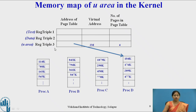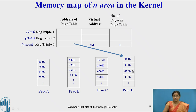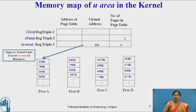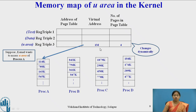Here, only the virtual address of the u-area and the number of pages in the page table are shown — text and data are not shown. Currently, process D is executing in kernel mode, so the u-area points to the page table of process D, whose virtual address is 2M, with 4 pages present in these tables. Now, suppose the kernel wants to access the u-area of process A — it is necessary to change the virtual address. It will load the virtual address of process A, which is 1M, and the number of pages present in the page table for process A, which is 4. In this way, the u-area virtual address changes dynamically.